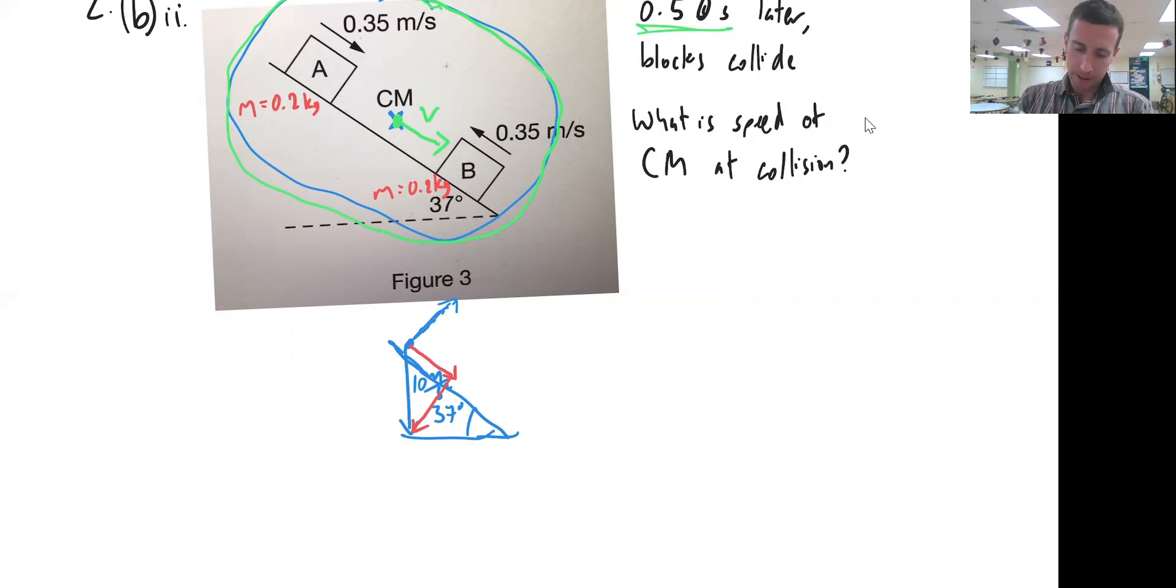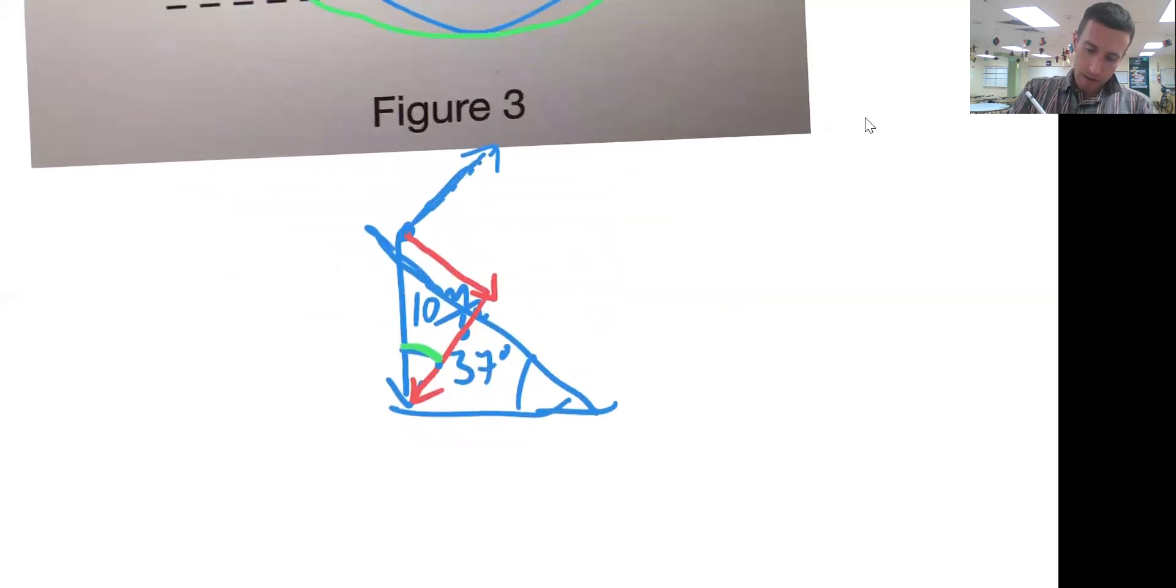So this 37-degree angle is the same as that 37-degree angle right there. I'll zoom in on that. So that angle right there is 37 degrees. I know that this part over here is 10.